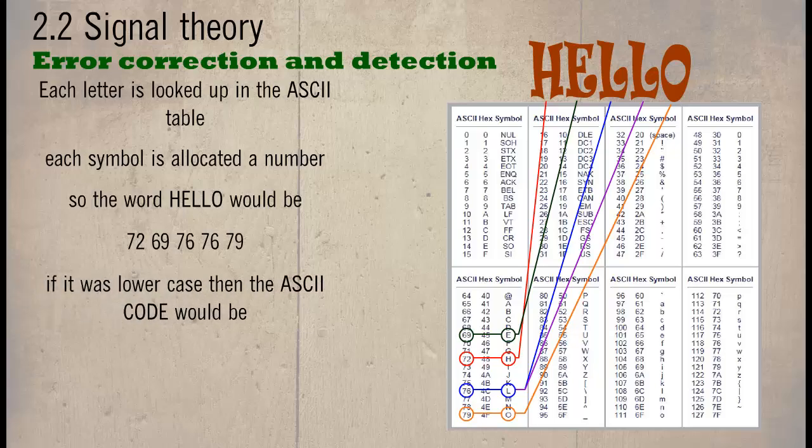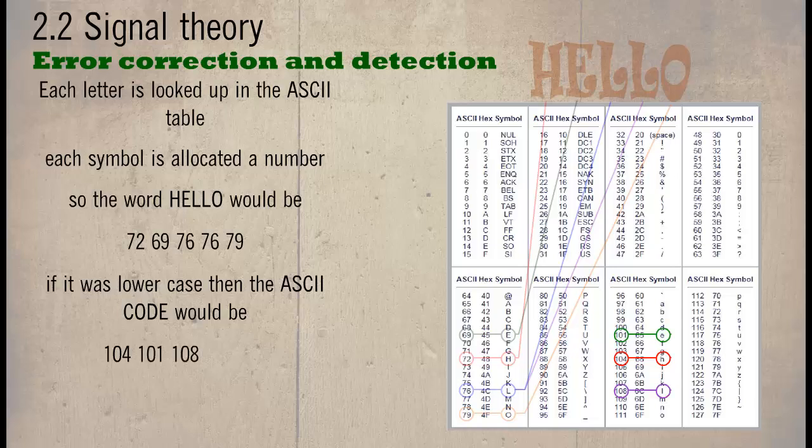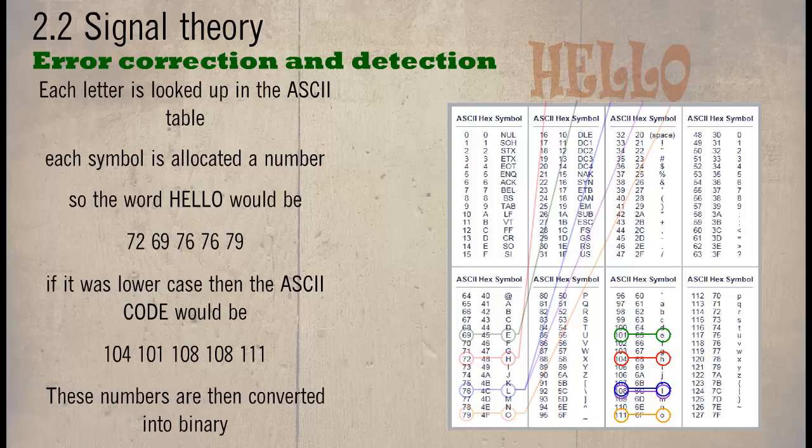If it was lowercase, then the ASCII code would be 104, 101, 108, 108, 111. These numbers are then converted into binary.